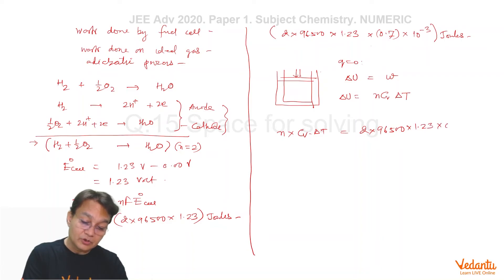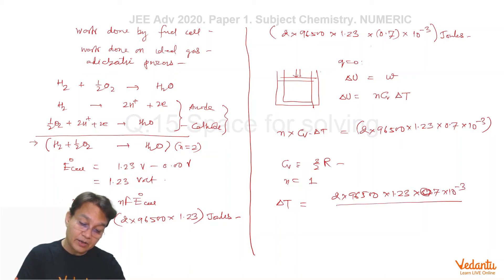So effectively, we have now n into Cv into delta T is going to be equal to 2 into 96500 into 1.23 into 0.7 into 10 to the power minus 3, and this divided by 3/2 into 8.314, that is the value of R, and that will give you the value of delta T.